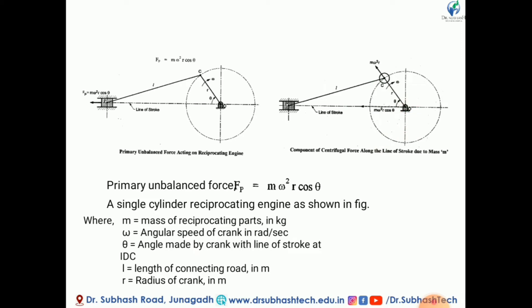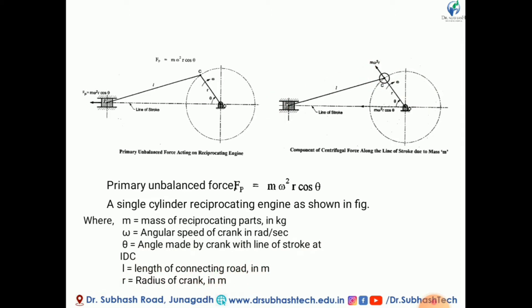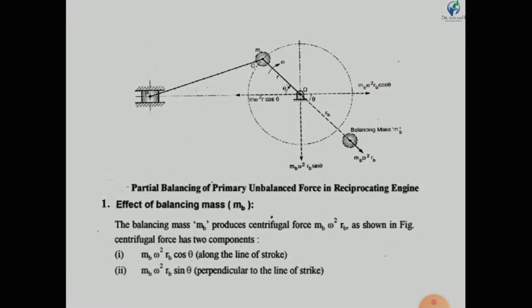Let us consider some notation: m is the mass of the reciprocating part in kg, ω is the angular speed of the crank in radians per second, θ is the angle made by the crank with the line of stroke, L is the length of the connecting rod, and r is the radius of the crank.